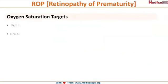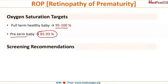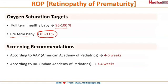Some important stats for the exam: the oxygen saturation target for a full-term healthy baby is 95–100%, and you can give 100% oxygen to this baby. However, to avoid ROP in a preterm baby, saturation should be maintained at 85–93% only and not beyond that. Regarding screening recommendations, the American Academy of Pediatrics says a premature baby should be screened at 4–6 weeks after birth, while in India the recommendation is 3–4 weeks after birth.